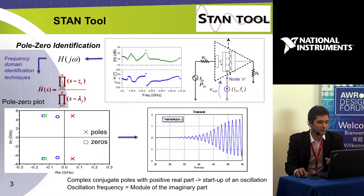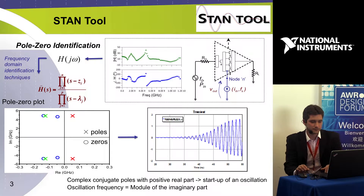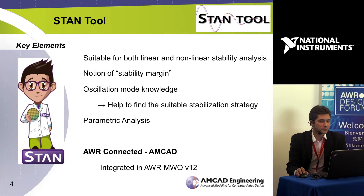If we have poles with a positive real part — that is, poles in the right half-plane — it means we have a startup of an oscillation. The oscillation frequency is given by the magnitude of the imaginary part of these right-half-plane poles. In this example it would be close to five gigahertz.